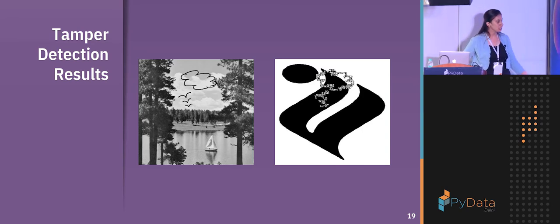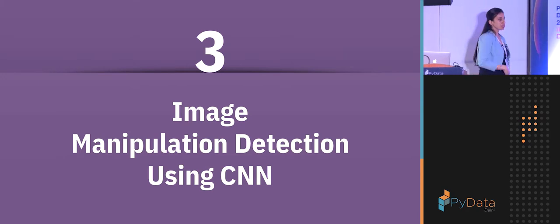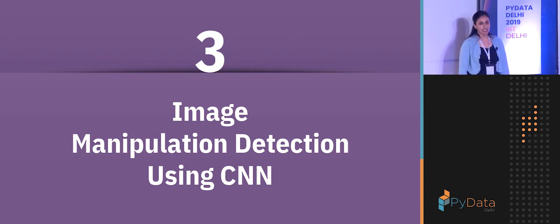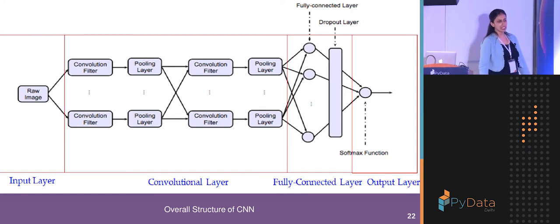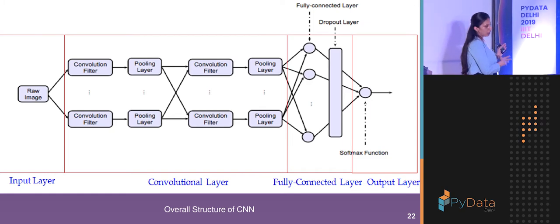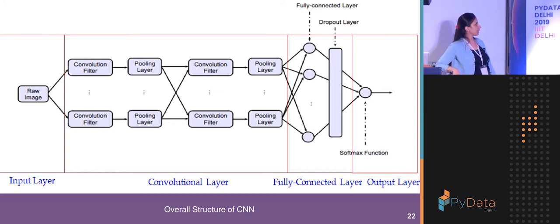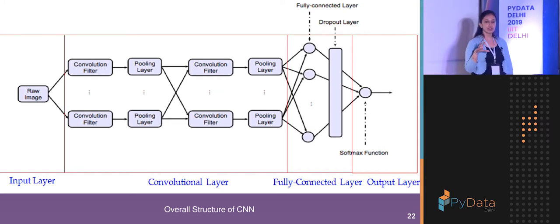Now moving to the passive approach, which I am currently studying and working on. I don't have definitive results yet, but I'm working on how neural networks can be used in the passive approach to detect manipulation in images. The basic CNN architecture has an input image, a set of hidden layers containing convolution layers, pooling layers, and activation function layers, followed by a fully connected layer for classification, and an output layer.